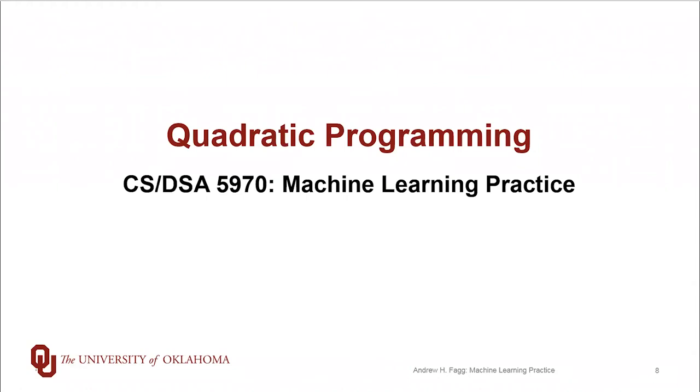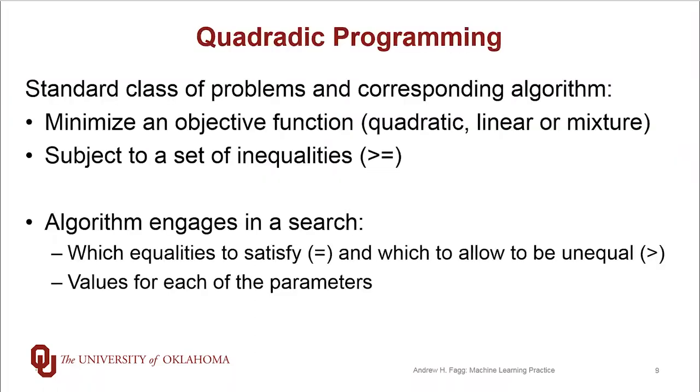We started talking about support vector machines, and at the very heart of these SVMs is something called quadratic programming. Quadratic programming is a standard class of optimization problems, and there's a corresponding algorithm to solve these problems, assuming we can get them into the correct form.